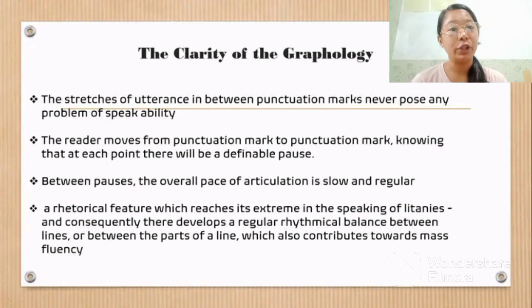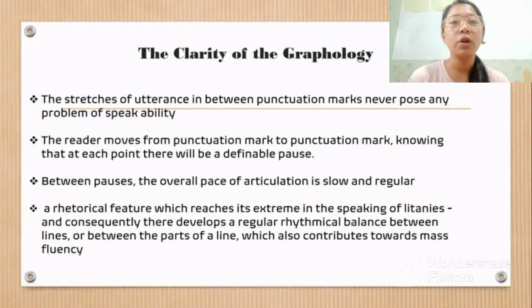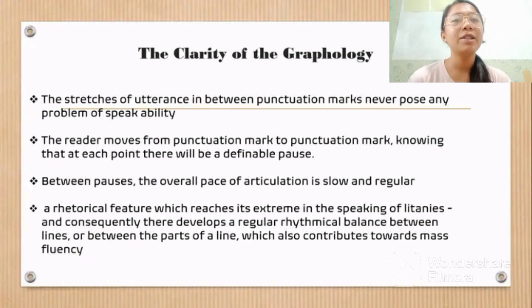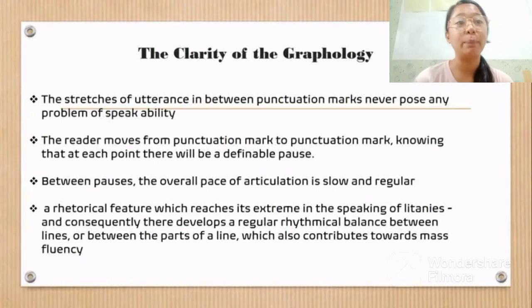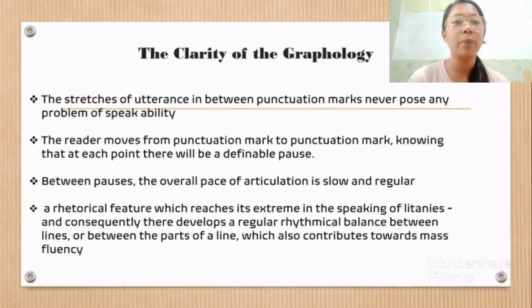A rhetorical pattern which reaches its extreme in the speaking of litanies consequently develops a regular rhythmical balance between lines, or between the parts of a line, which also contributes towards mass fluency. Factors such as this combine to produce a standardizing effect, reducing idiosyncratic extremes between people. Thus, a naturally rapid speaker will tend to slow down, and vice versa. Occasionally, it is the case that a person has such a rapid rate of articulation that they cannot conform to the conventional rhythm the majority are using, but it is interesting that such a person always obeys the main pauses.